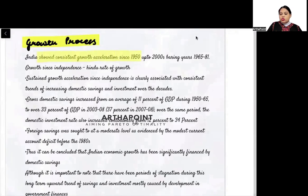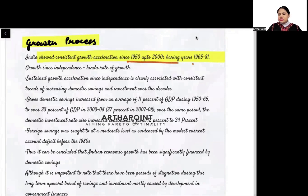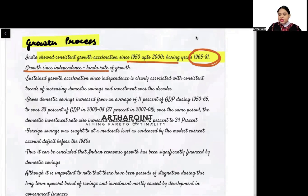India showed consistent growth acceleration since 1950 up to 2000, bearing the years 1965 to 1981. When we say India didn't perform well in these years, it was the period of the Hindu rate of growth era. Growth since independence was called the Hindu rate of growth, meaning it didn't have a good growth rate.